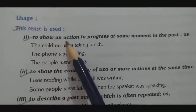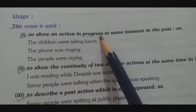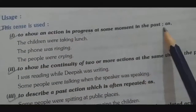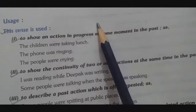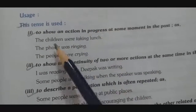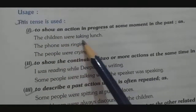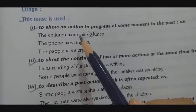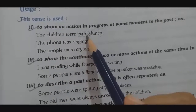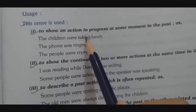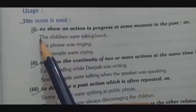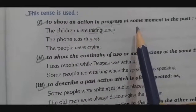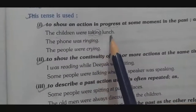Past continuous tense is used to show an action in progress at some moment in the past — a continuous action happening in the past. Example: 'The children were taking lunch.' Here 'were' is past tense and 'taking' with 'ing' shows the continuous form. The children were having their lunch — it was in progressive form.